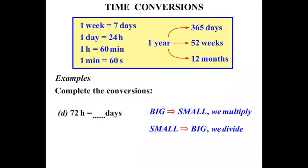72 hours equals how many days? Well, hours and days - what's the connection? One day is 24 hours. So we're going to be using a factor of 24. We are changing from hours to days, from something smaller to something bigger, so we divide. We divide by that 24.